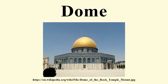A dome is an architectural element that resembles the hollow upper half of a sphere. The precise definition has been a matter of controversy, and there are also a wide variety of forms and specialized terms to describe them. A dome can rest upon a rotunda or drum, and can be supported by columns or piers that transition to the dome through squinches or pendentives.